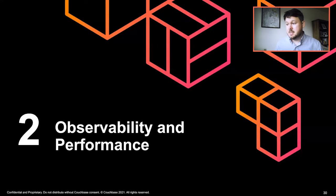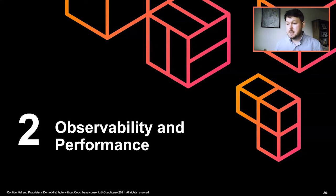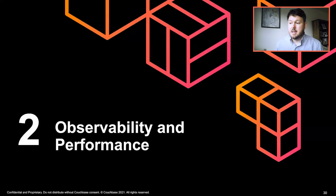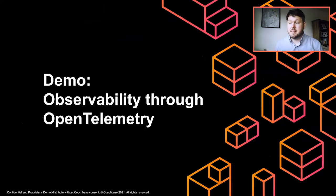Distributed systems can be challenging to diagnose — multiple nodes, networks, and hardware can fail at any time. OpenTelemetry is the combination of OpenTracing and OpenCensus, and it aims to provide metrics and tracing showing exactly how your data flows through your distributed system. We believe it's a key part of the solution. In this section, we'll use our OpenTelemetry integration to solve a real-world performance problem — Matt has set up a cluster simulating a configuration fault. All we know is that some transactions are much slower than others.